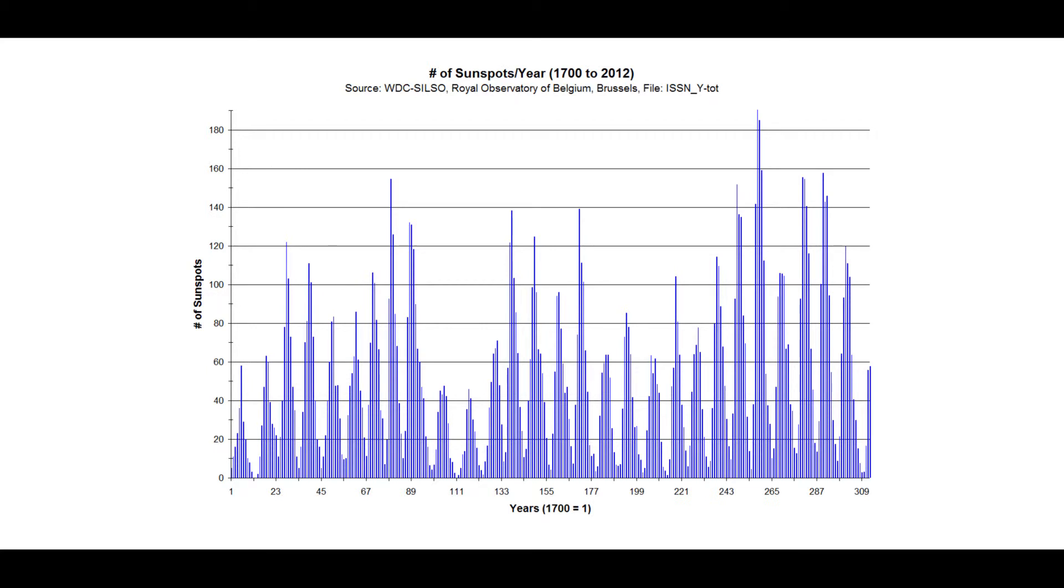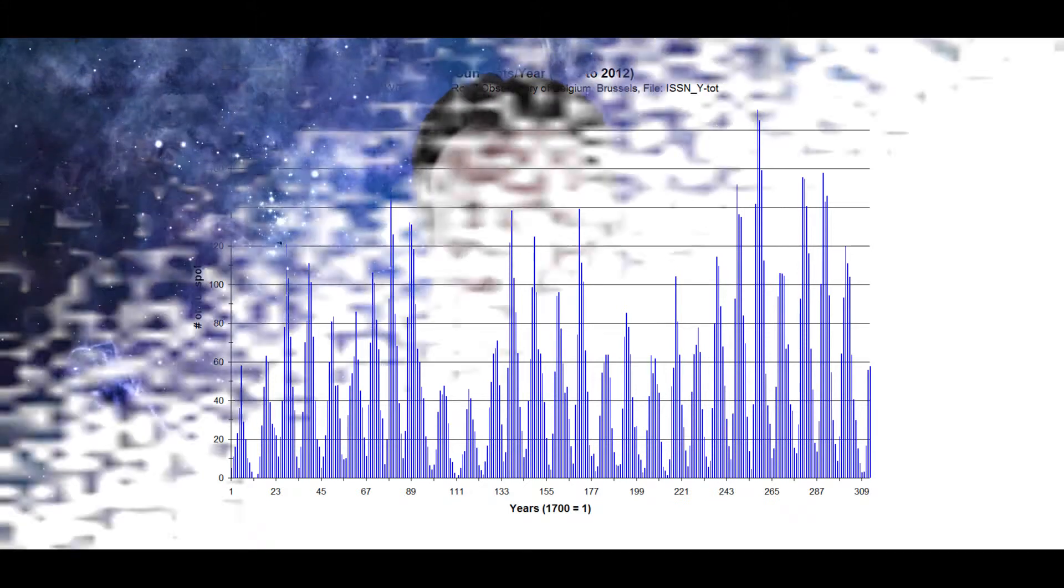The number of sunspots per year recorded from 1700 to 2012 have values ranging from 0 to 190. Is it possible that each sunspot is in a one-to-one correspondence with the number of cosmic scale atomic charges the solar system is currently within?